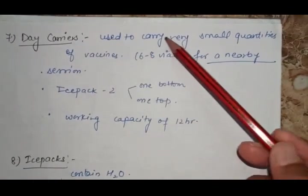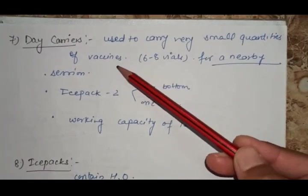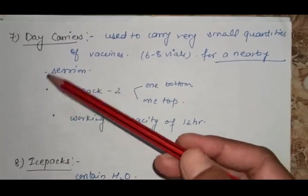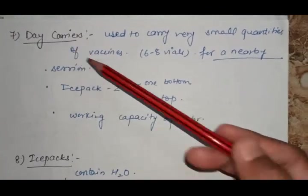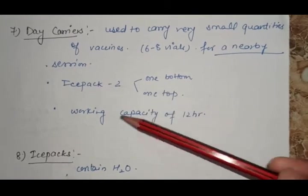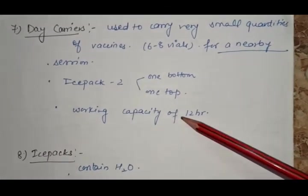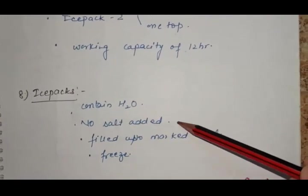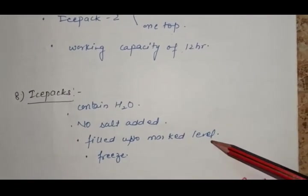Next are day carriers, used to carry small quantity of vaccine, 6 to 8 vials for nearby sessions. For example, OPV pulse polio when we are going. Day carriers use 2 ice packs, one at bottom and one at top, with working capacity of 12 hours. Ice packs contain water with no salt added, filled to marked level and frozen.